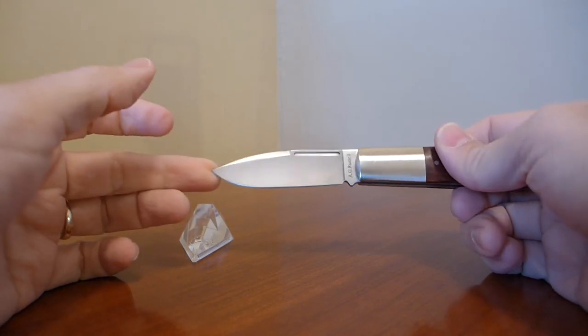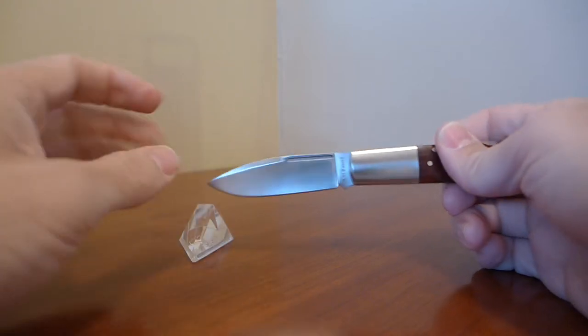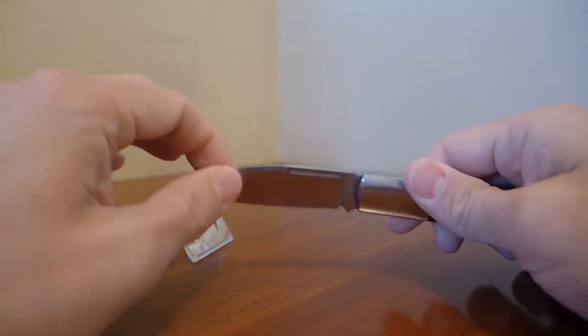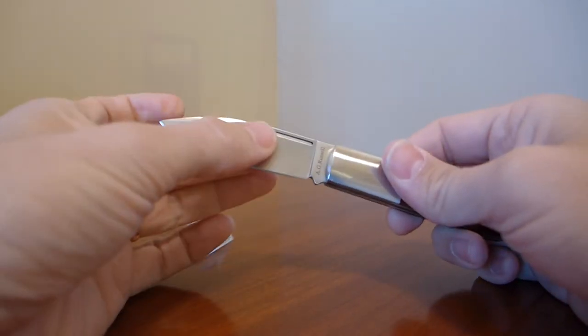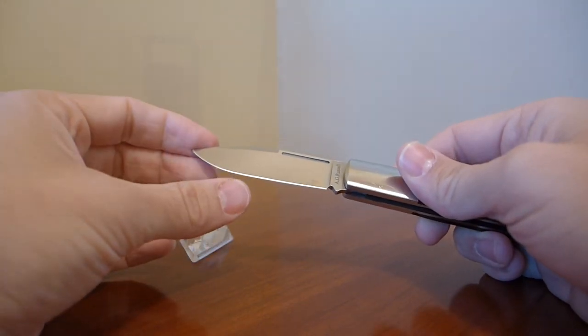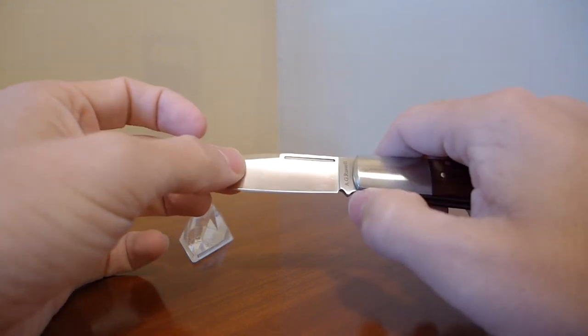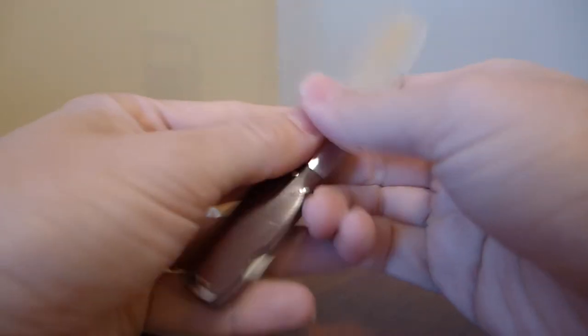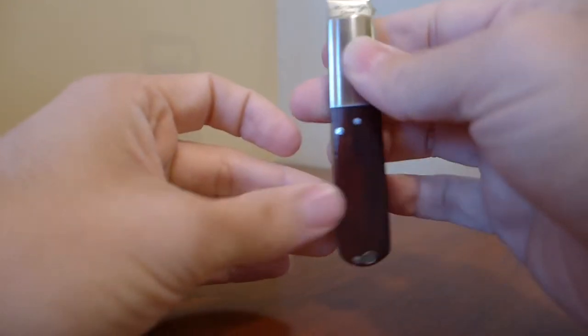This has what A.G. Russell calls his Zulu Spear blade type. It has a nice swedge in the top that allows the knife some thin point for penetrating cuts. The stock, however, is still relatively thick. It does have a relatively shallow hollow grind, and the cutting bevel is quite nice. You can see here that there's a little bit of a ricasso so that you can sharpen the knife all the way to the edge. And you can also see that it has the other trademark of the Barlow form, which is the teardrop-shaped handle.